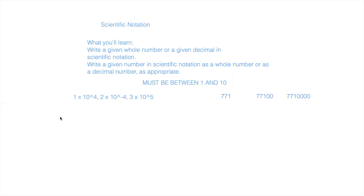When we have scientific notation written in this format, your answer will be written as a decimal. Vice versa, when you have a decimal, you'll write the answer in scientific notation form. This is also where the rule 'must be between 1 and 10' comes into play. The number we multiply by 10 to a power always has to be between 1 and 10 — that's just how scientific notation works.